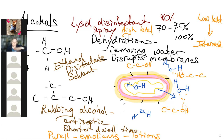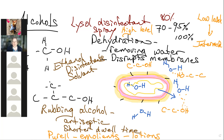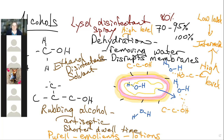If I rub rubbing alcohol on a surface, it evaporates off quickly unless I keep adding more. With Lysol disinfectant spray, something prevents it from evaporating as quickly, so it stays on the surface longer and achieves a greater kill, reaching high level. The book averaged — some are high level, some are low level — so they called it intermediate. The low/intermediate/high designation is all based on dwell time.